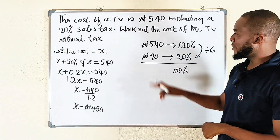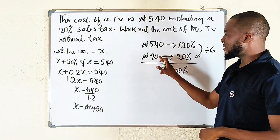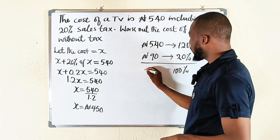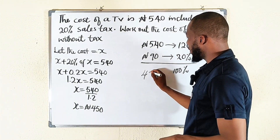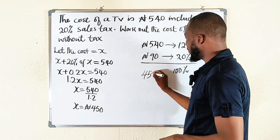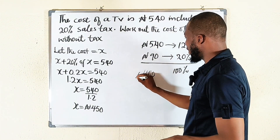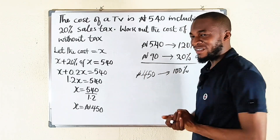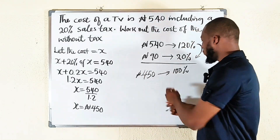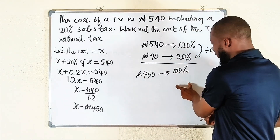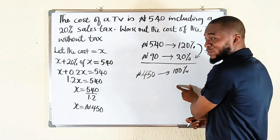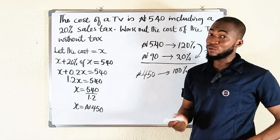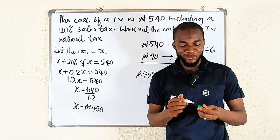540 minus 90 gives us 450 Naira. Therefore 100%, which is the cost of the TV, is 450 Naira — without using a calculator.